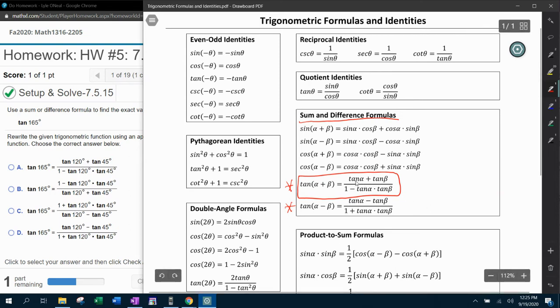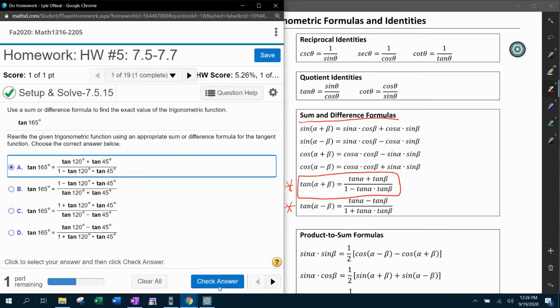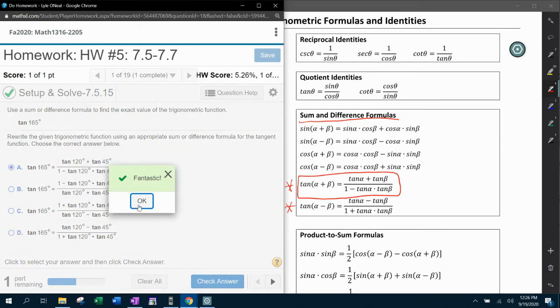And then all we have to do is figure out which one of these is set up correctly. So notice in the formula, the numerator has tangent of alpha plus tangent of beta. So the alpha and the beta, those are the two numbers that have to add to make in this case 165. And it looks like answer choice A has the fraction set up correctly. Here we have tangent of alpha plus tangent of beta, one minus tangent of alpha times tangent of beta. And that's going to be answer choice A.